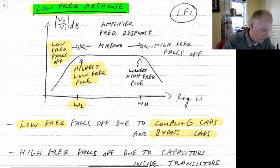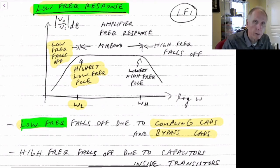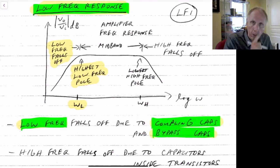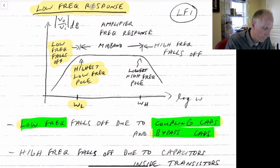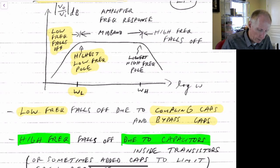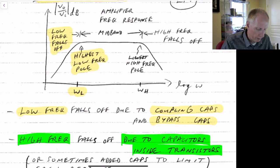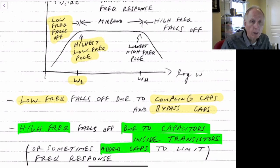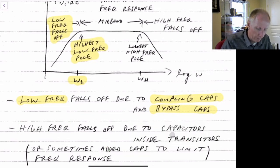Our low frequency region is generally determined by our coupling capacitors and our bypass capacitors, and we'll see an example of each of these. The high frequency region, which we're not discussing in this video, is due to capacitors typically inside the transistors that restrict our high frequency performance. Sometimes there will also be added capacitors that limit frequency response, generally for noise or stability reasons.